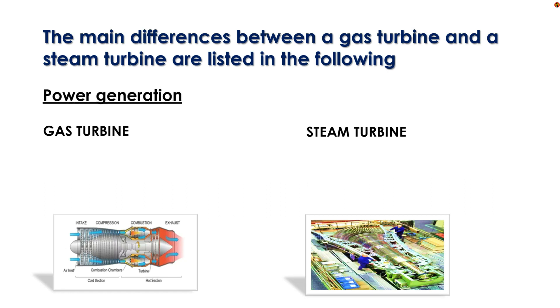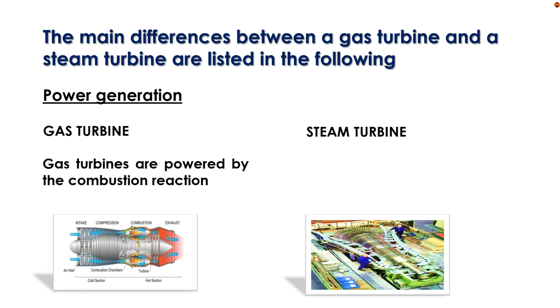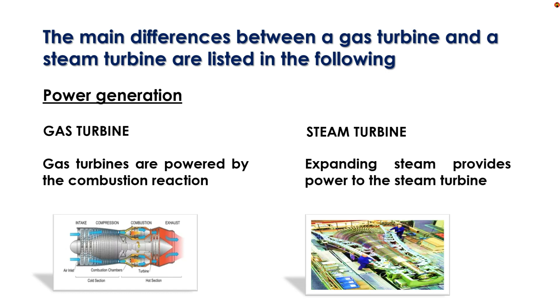Power generation: Gas turbines are powered by the combustion reaction. In steam turbines, expanding steam provides power to the turbine.